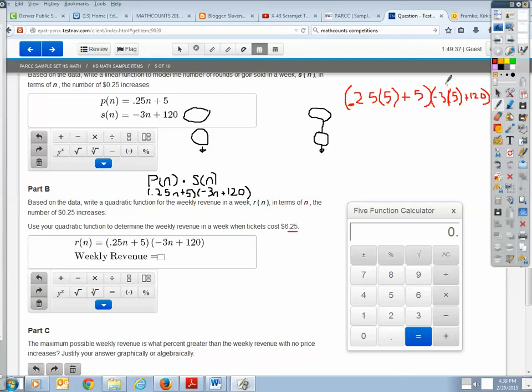So let's go ahead and figure this out. 0.25 times 5 plus 5 is obviously going to be $6.25. It already gives us that in the problem, which is nice. So then negative 3 times 5 is negative 15, plus 125. So that means I'm going to sell 105 rounds of golf.